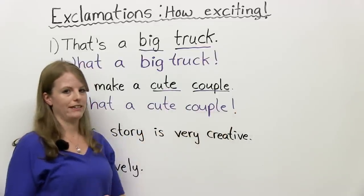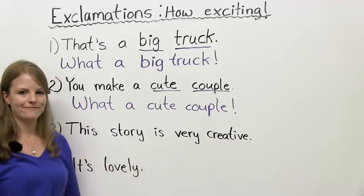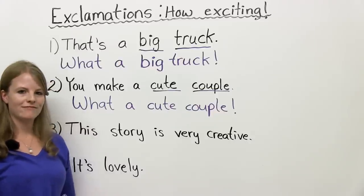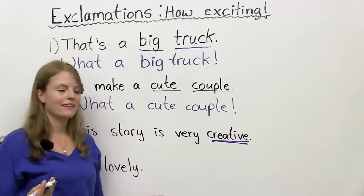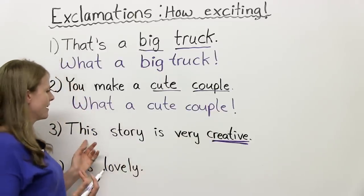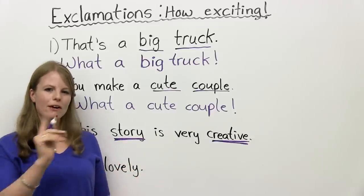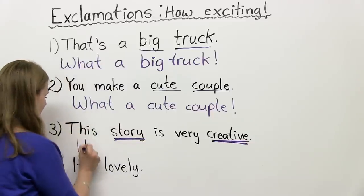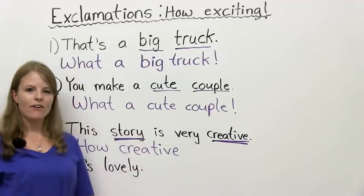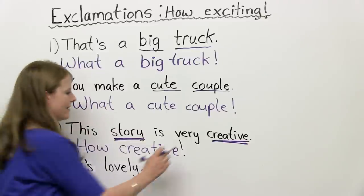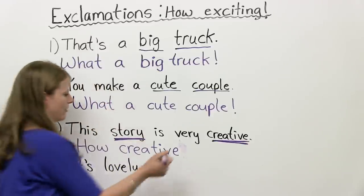Number three. This story is very creative. How can we turn this into an exclamation? Well, first, is there an adjective? Yes. Is the adjective describing a noun behind it? We could say, what a creative story. So yes, there is a noun. So we could say, what a creative story. But I want to use how this time. I can say, how creative. So I can say, how creative. I can put an exclamation mark. Or I can say, if I want, I can say, how creative this story is. How creative. How creative this story is.